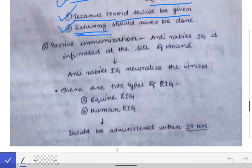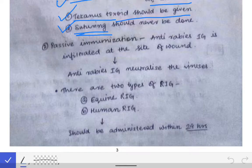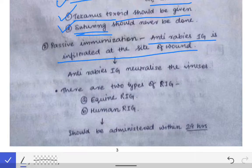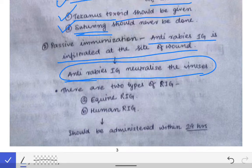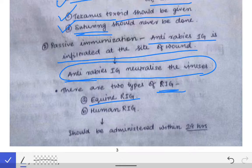Passive immunization means infiltration of already formed antibodies against the rabies viruses so that those viruses can be neutralized. In passive immunization, anti-rabies immunoglobulin is infiltrated at the site of the wound, and these anti-rabies immunoglobulins neutralize the viruses by binding with the rabies antigen. There are two types of anti-rabies immunoglobulins: equine anti-rabies immunoglobulin, obtained from the horse, and human anti-rabies immunoglobulin.